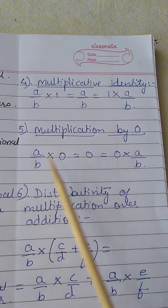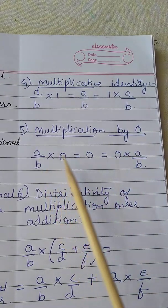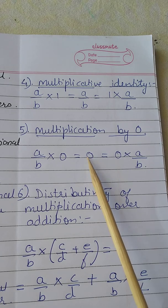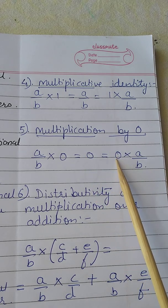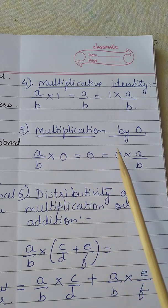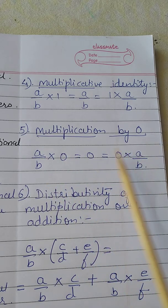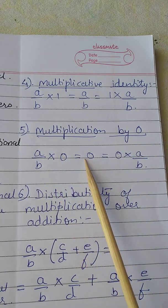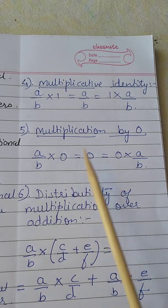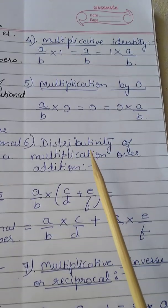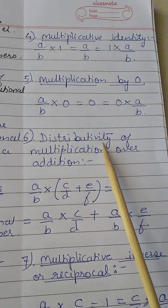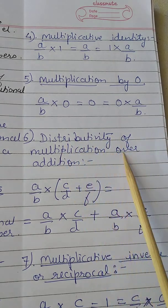Next is multiplication by zero. When you multiply a rational number with 0, the answer is always 0 — whether you write 0 first or second. Both a/b × 0 and 0 × a/b give 0. So any rational number multiplied by 0 is always 0.